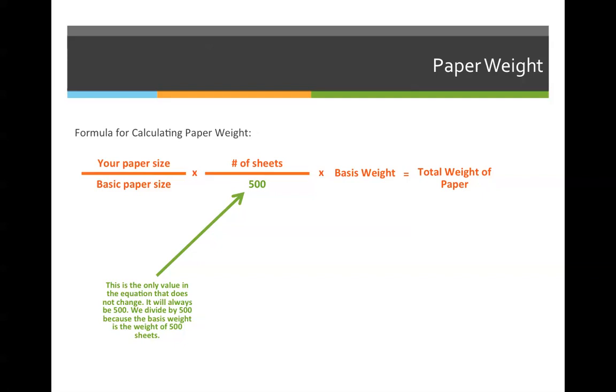All the information in orange will always change. You have to find the answers and plug them in. The blue, I'm sorry, the green 500 will always be the same. It's the only thing that does not change. We're going to divide by 500 because the weight of 500 sheets is the basis weight. So we need to put it all in terms of 500. So that 500 value will always be the same.